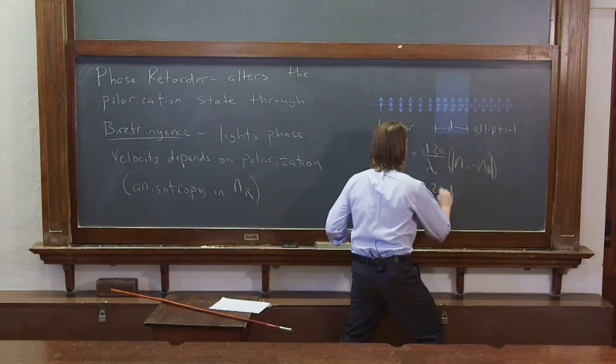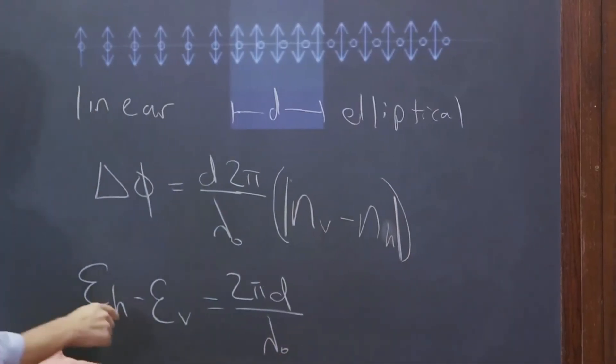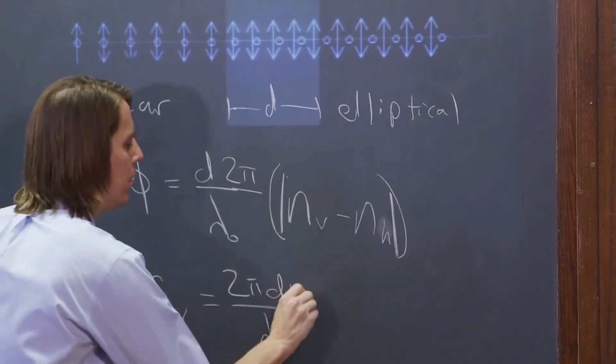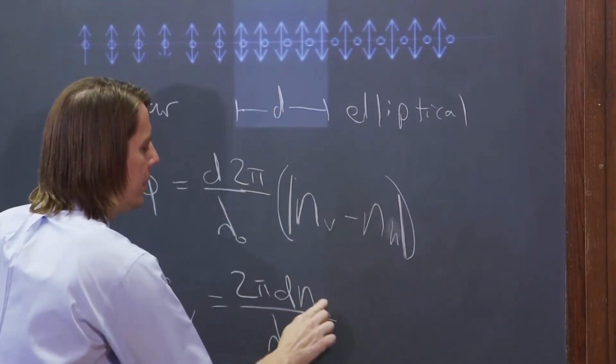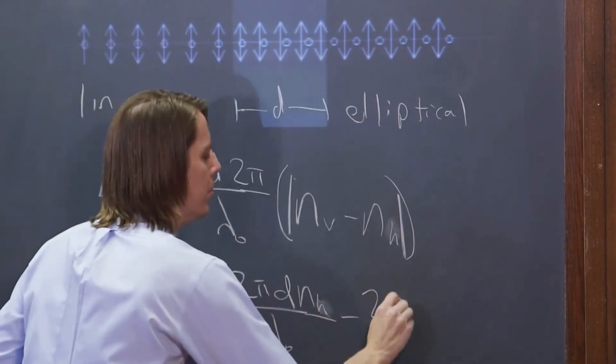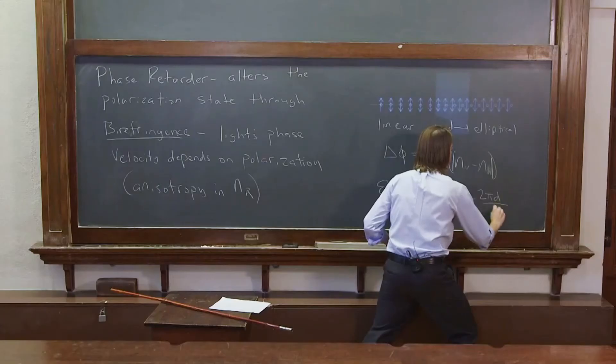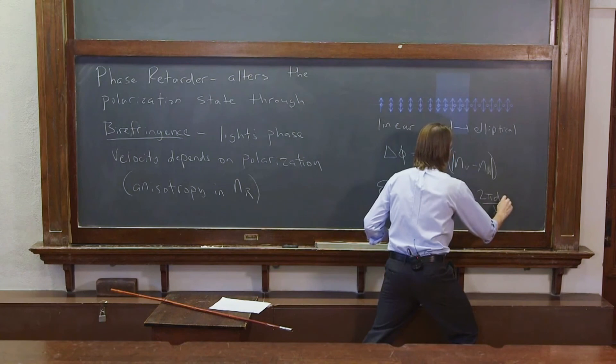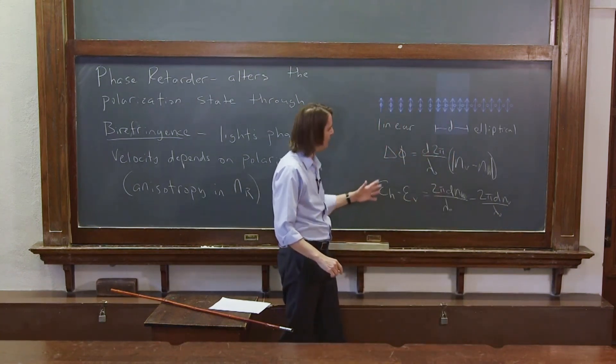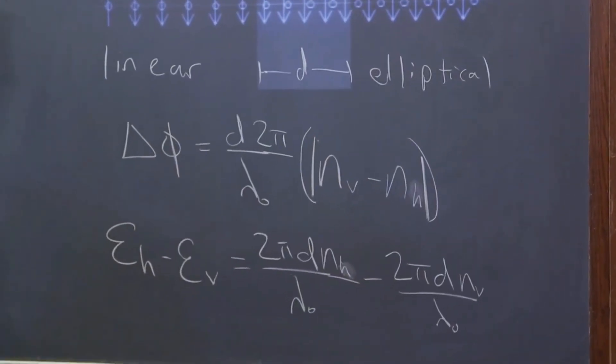That would just be how much phase did they build up the whole time? 2πd/λ₀. And this one, it's going to be nₕ up here, and then this one minus 2πd/λ₀ nᵥ. So you can see it's basically the same, but this is being more specific about the exact phase differences.